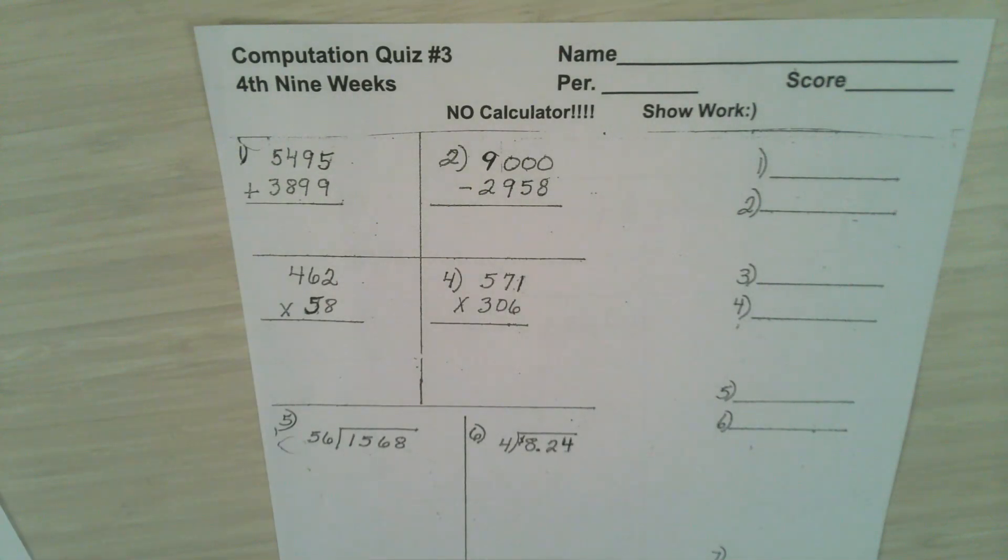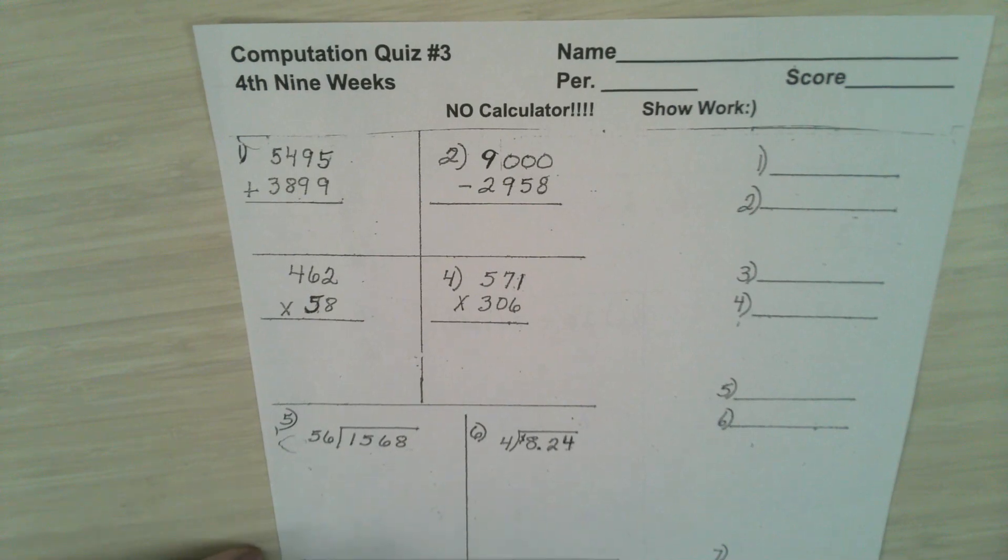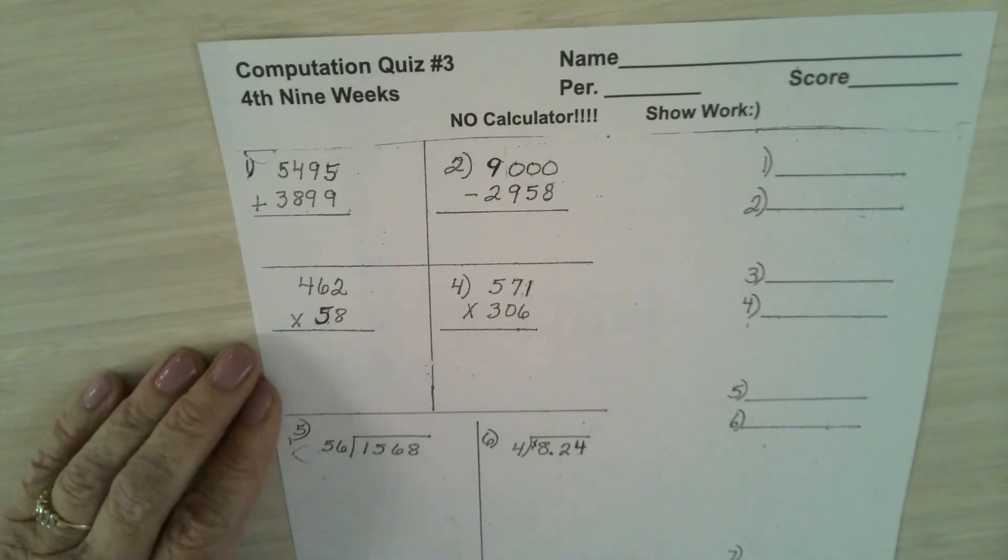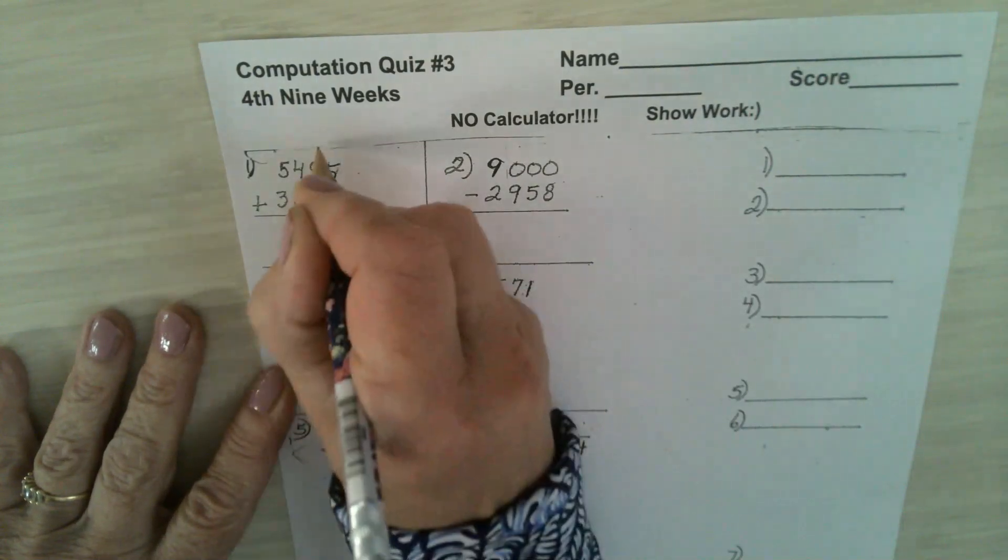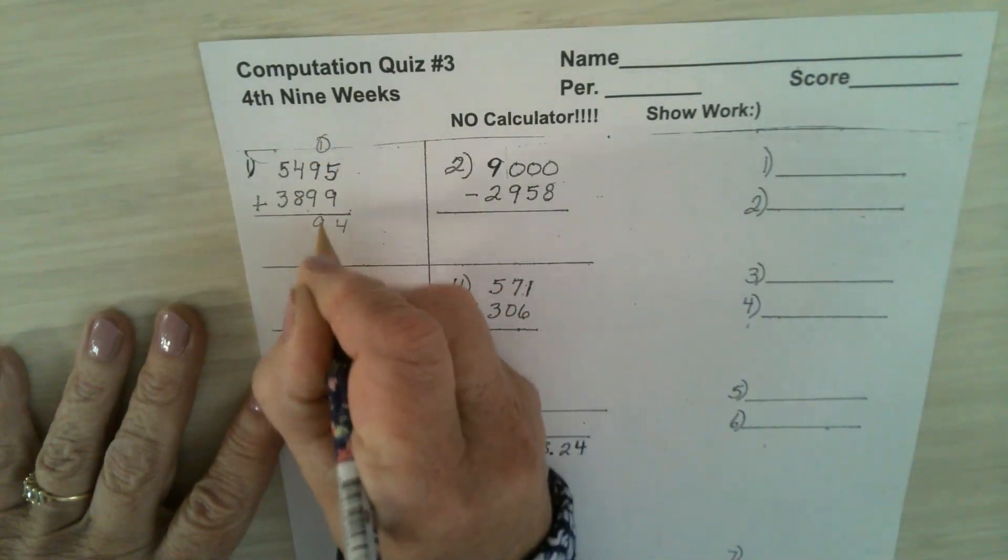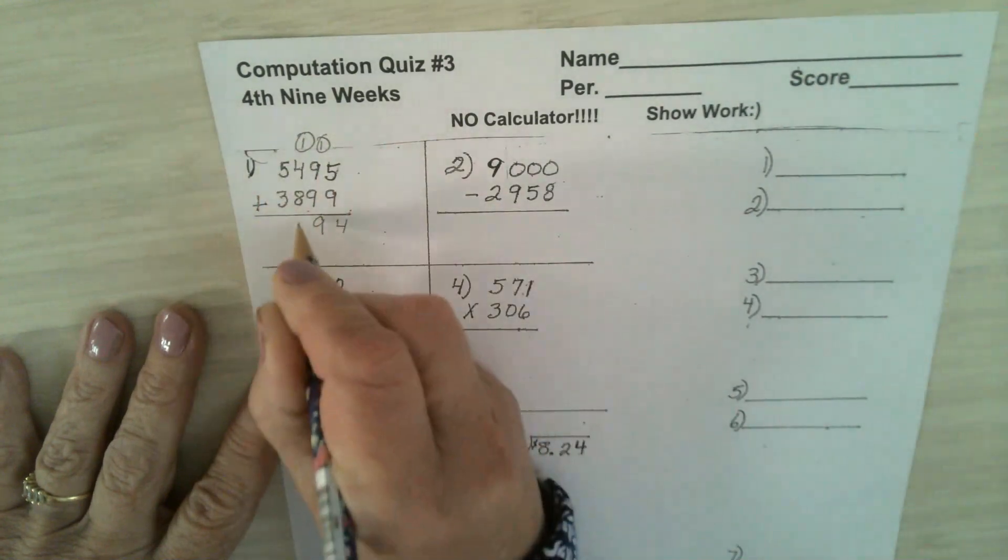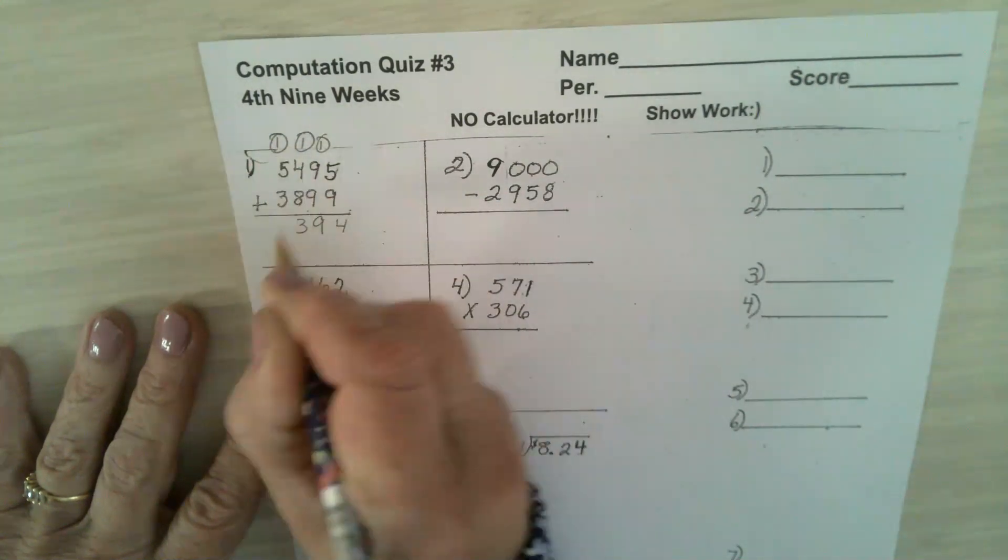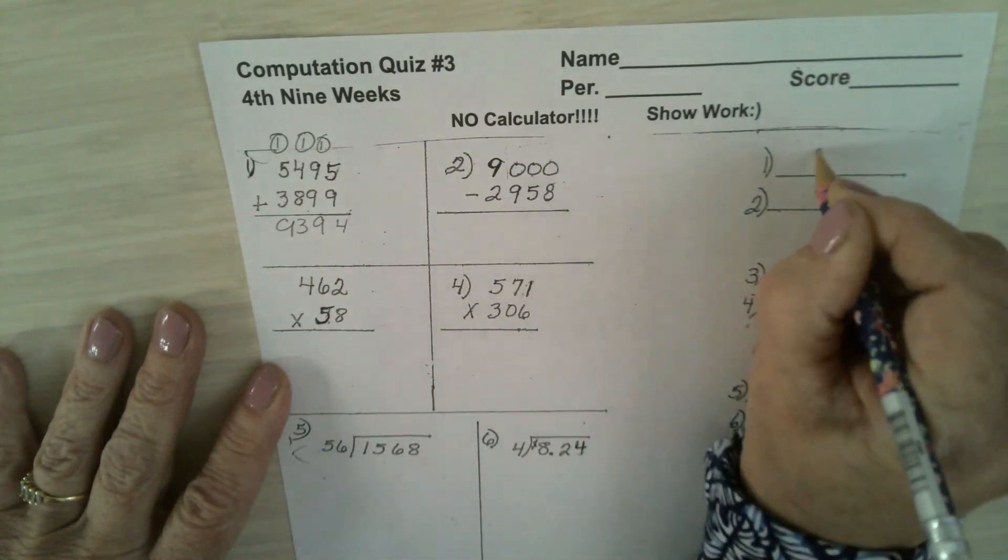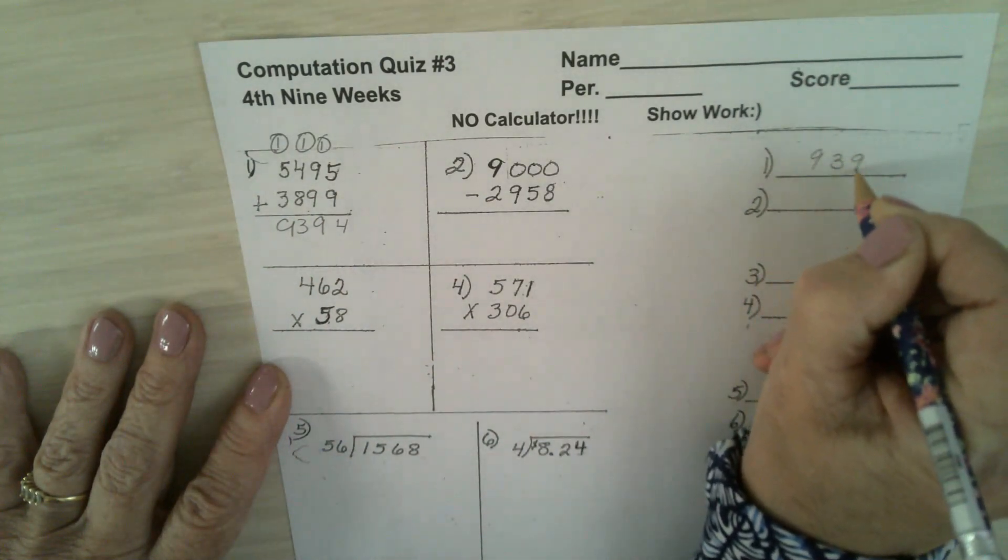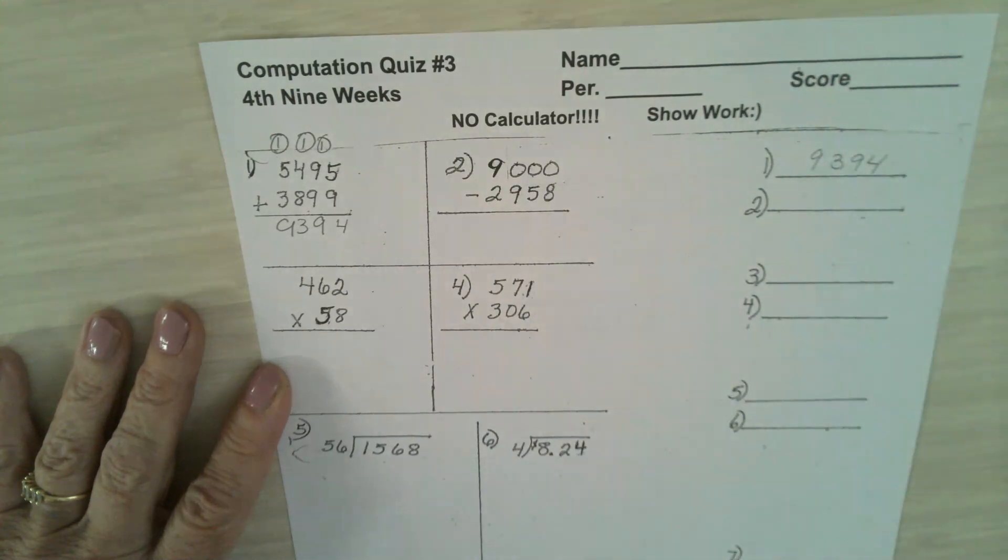Okay, we'll be doing quiz number four soon, and it's very similar to this, so let's make sure everyone knows how to do these problems. In problem number one, when you add the numbers together, you should have 9,394.